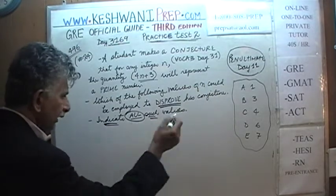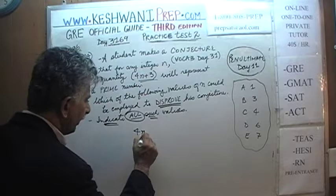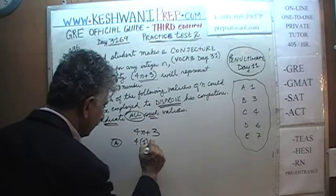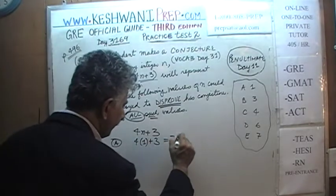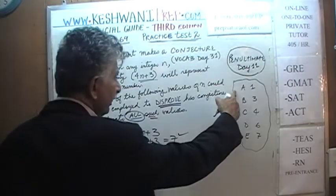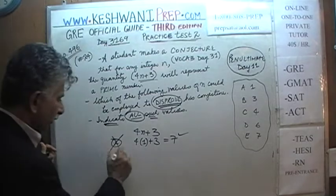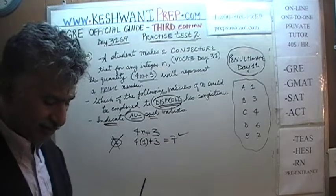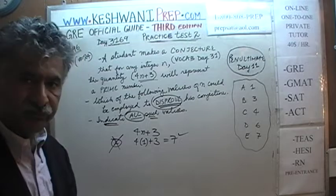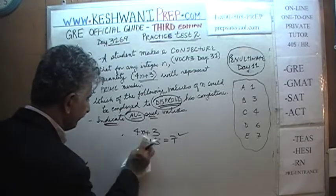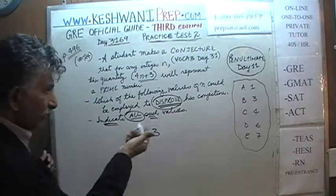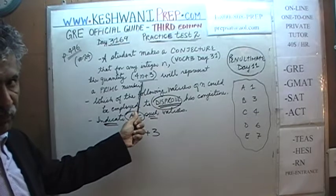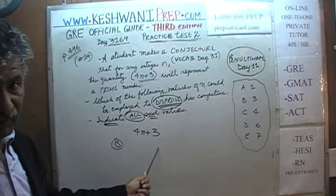Let's begin. Our quantity is 4n plus 3. For answer choice A, n equals 1: 4 times 1 plus 3 is 7, and 7 is a prime number. Since 7 is prime, we cannot use that to disprove the conjecture. A does not work. What the student is claiming is that if n is an integer, this quantity will always be a prime number. When we plugged in 1, it was a prime number, so we were unable to disprove him. Let's look at B.